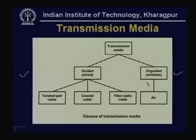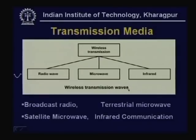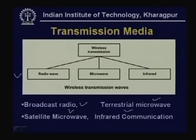We shall also discuss the transmission of signal through unguided media, or through air. In that case there are three mechanisms of wireless transmission: radio wave, microwave, and infrared. The examples include broadcast radio (AM/FM), terrestrial microwave, satellite microwave, and infrared communication. These are the four different types of transmission in the context of wireless communication, and we shall discuss all of them in details.